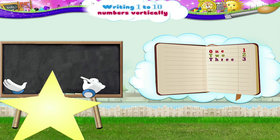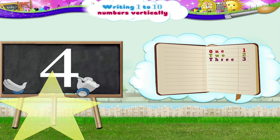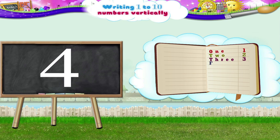4. Go down the slanting line. Now, the straight line from left to right. Now, back to the top and down the straight line. F-O-U-R, the number 4.